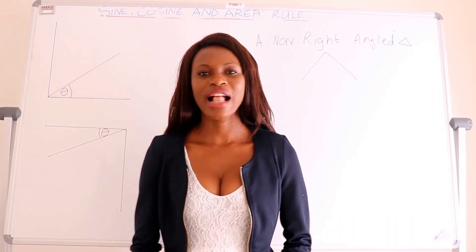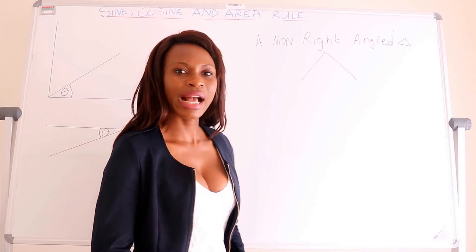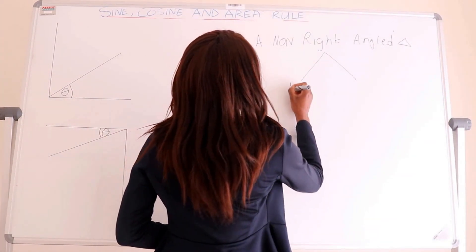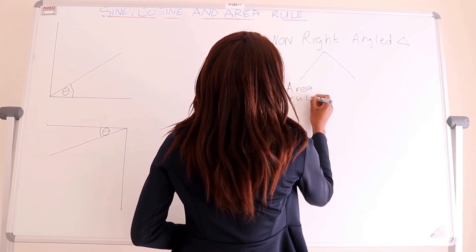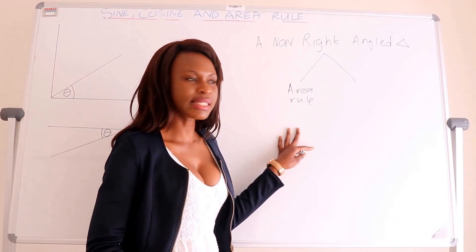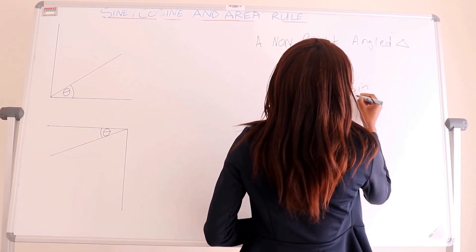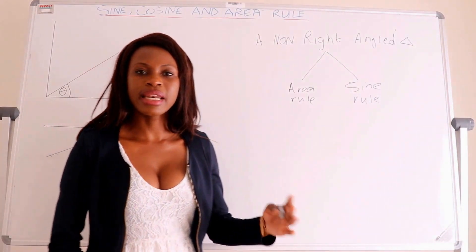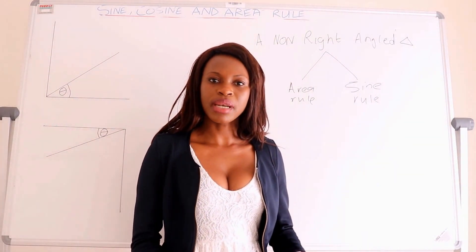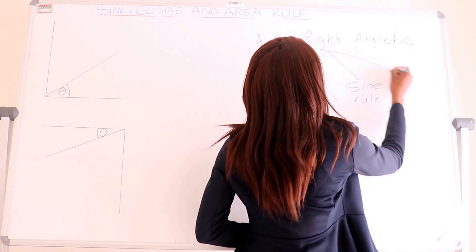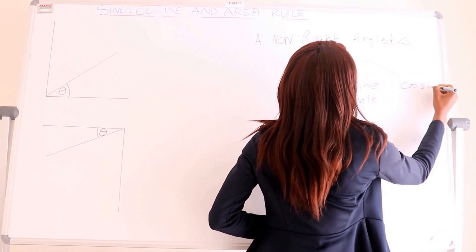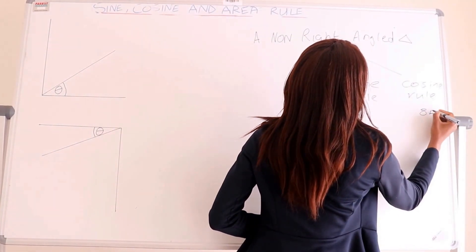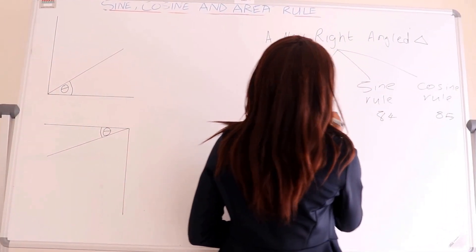With non-right angle triangles, what you have to know is that to solve them you use the area rule, which I will be showing you in this lesson. You also use the sine rule, which I will deal with in lesson 84, uploaded tomorrow. And you also use the cosine rule, which will be in lesson 85.